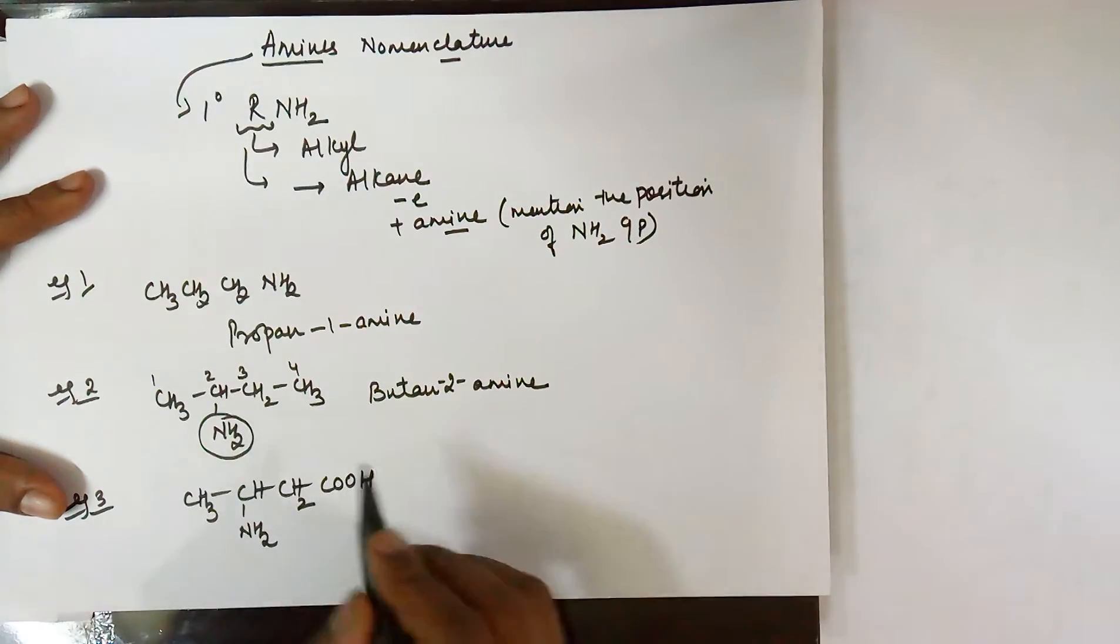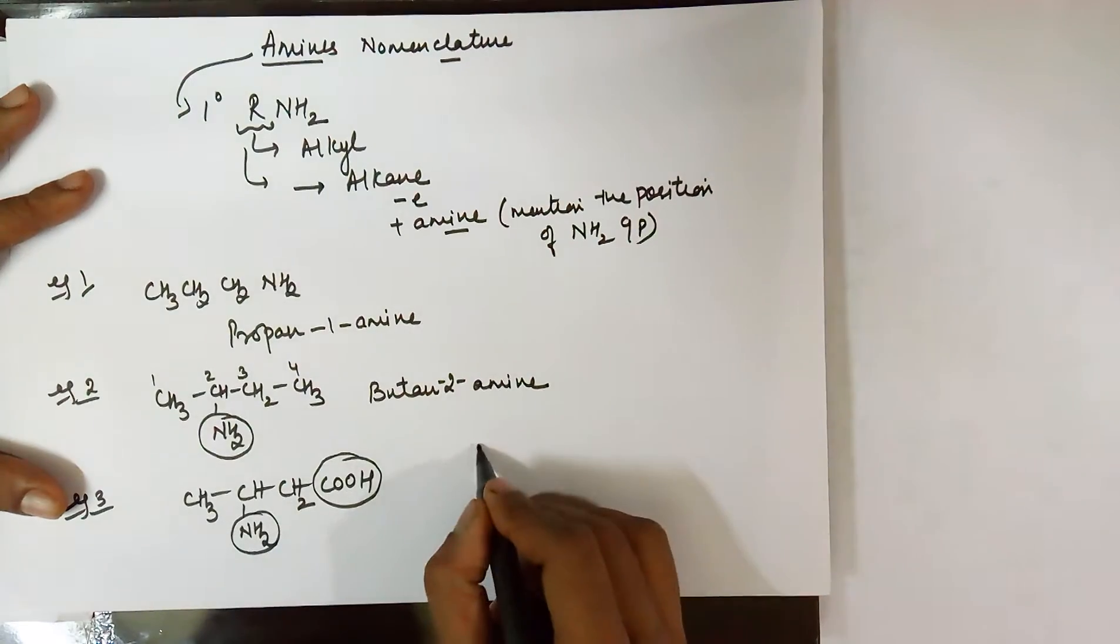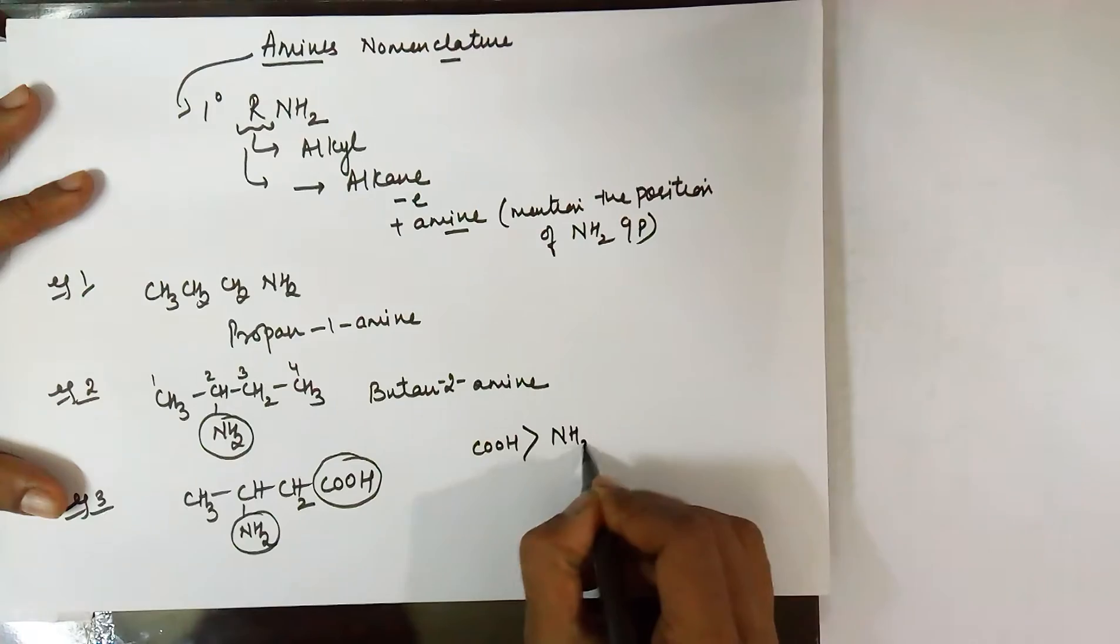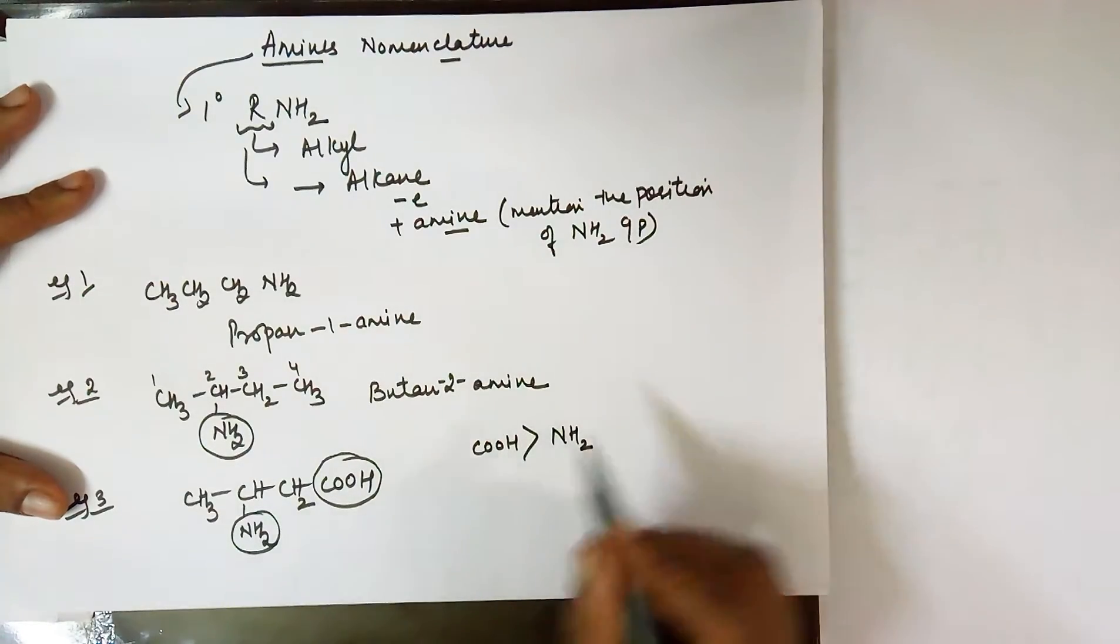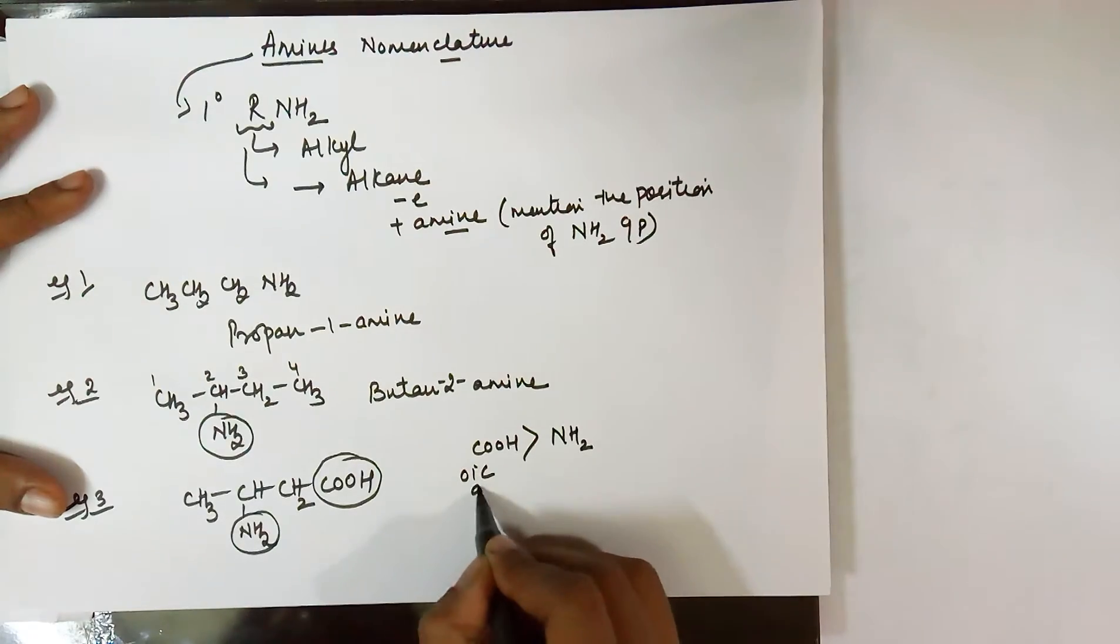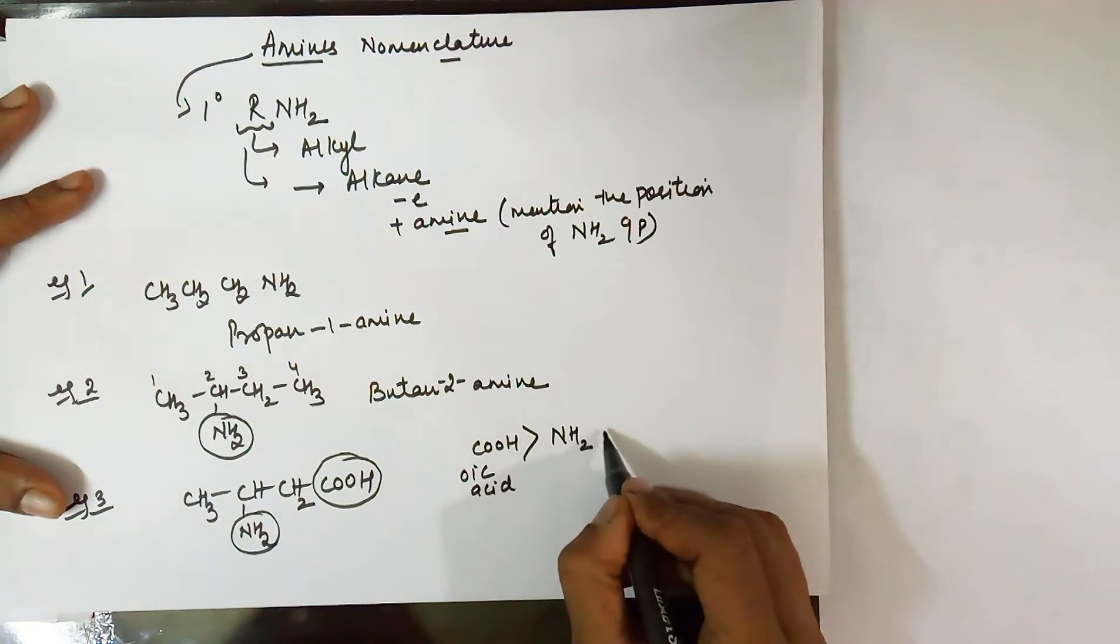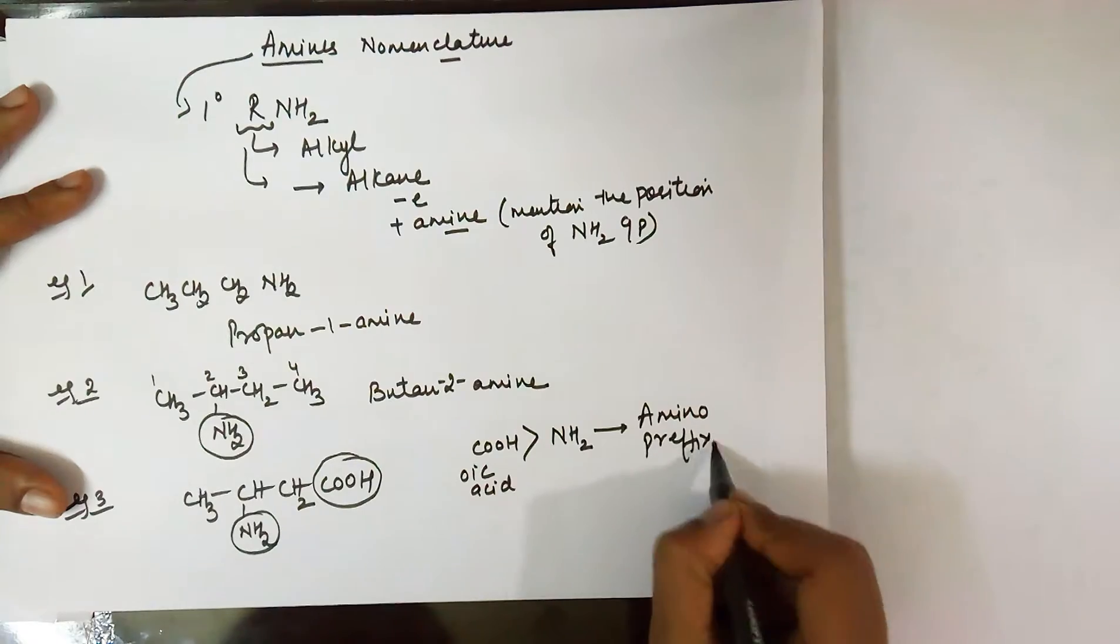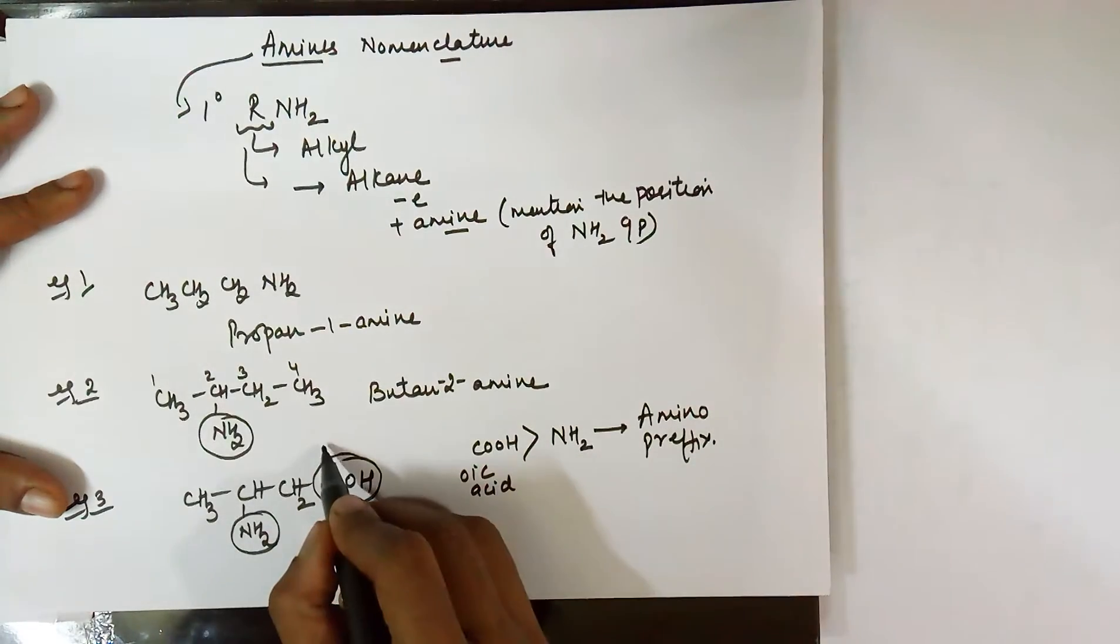Priority of a carboxylic acid is much higher than that of an amine. Therefore, we will be using suffix of carboxylic acid, which would be 'oic acid', and this suffix for amine cannot be used. We will have to use 'amino' as the prefix. Therefore, numbering it up...